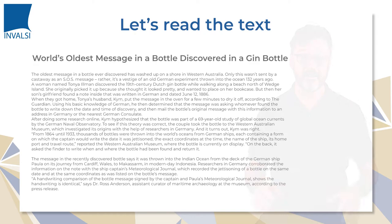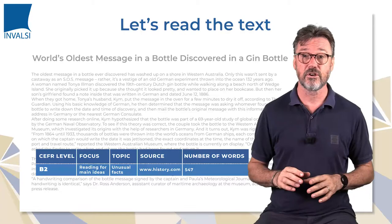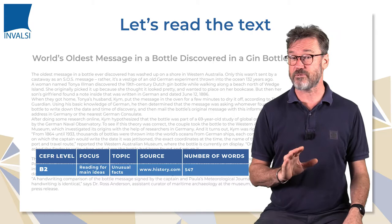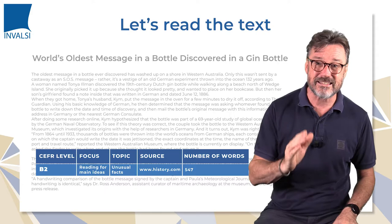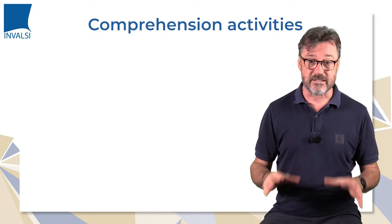It's now time to read the first text, which is a B2 level text. It's an authentic article in the form of a narrative text reporting a true story: 'World's oldest message in a bottle, discovered in a gin bottle.' The topic is not abstract or particularly complex, but the length, grammar and syntax, as well as the vocabulary, make it B2. We're going to ask the students to read the text silently and to make notes on the main ideas of the text.